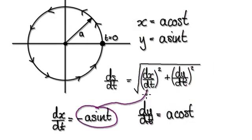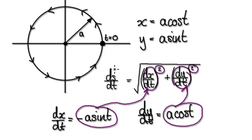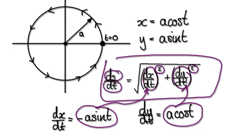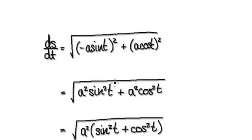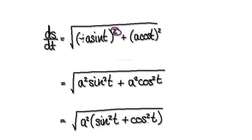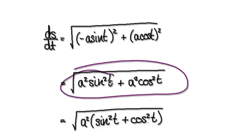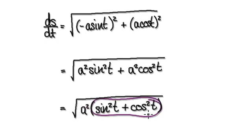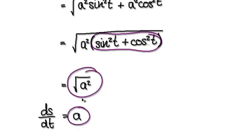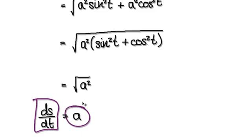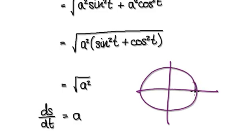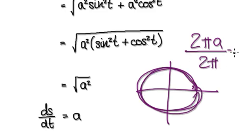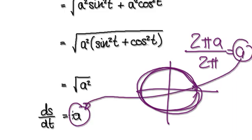Now we can substitute dx/dt and dy/dt into the speed formula and square both of them. ds/dt is given by this expression. When you square it, the minus disappears, giving us this. Factorising the a squared, and this whole thing is 1 by the trig identity, so that becomes a squared. Square rooting a squared gives us a. The speed is a, which is consistent with what we found earlier: the circumference 2πa divided by the time 2π gives a speed of a.